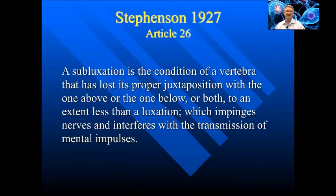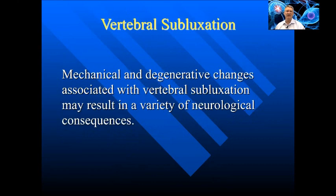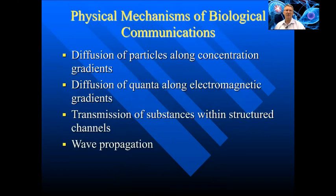In 1927, Stevenson defined subluxation as a condition of a vertebra that has lost its proper juxtaposition with the one above or the one below, or both, to an extent less than a luxation, which impinges nerves and interferes with the transmission of mental impulses. Mechanical and degenerative changes associated with vertebral subluxation may result in a variety of neurological consequences.